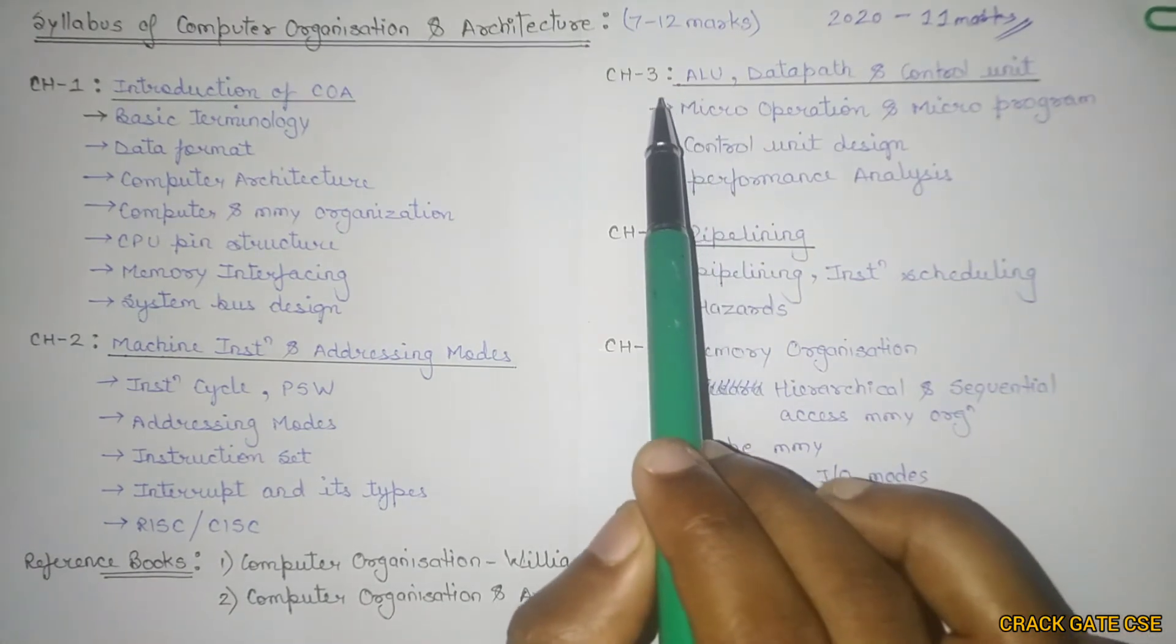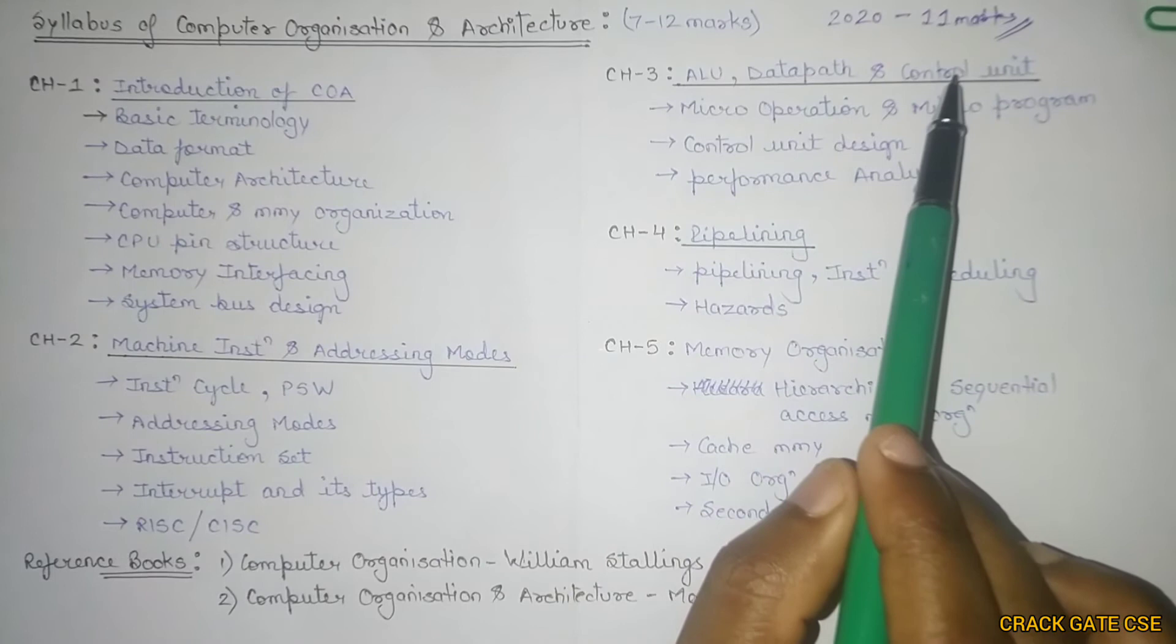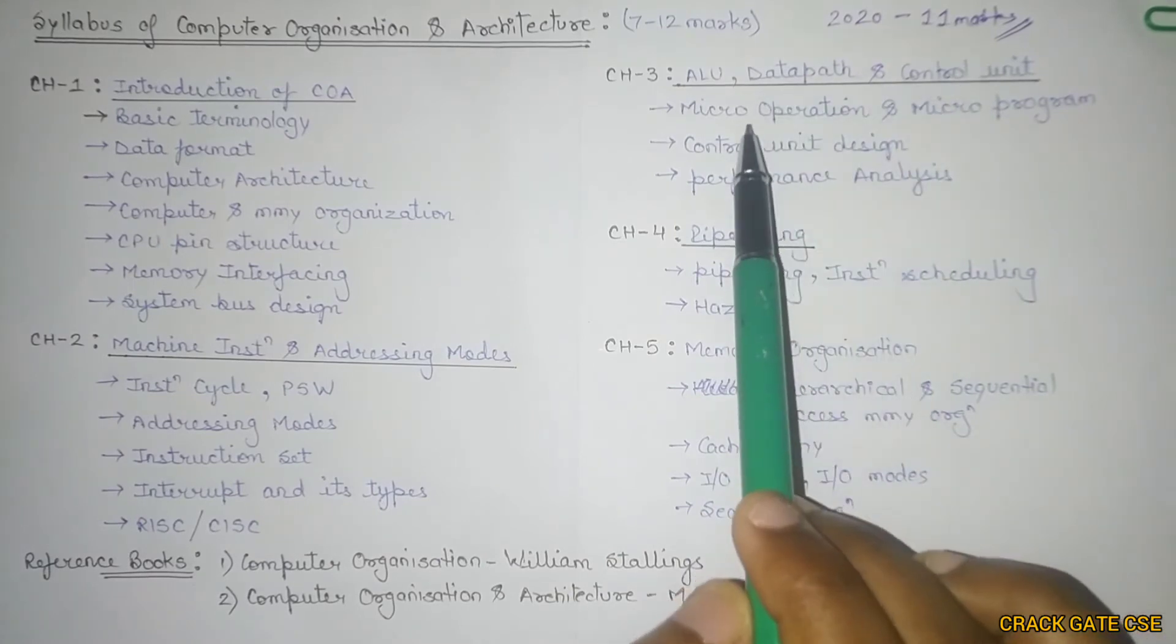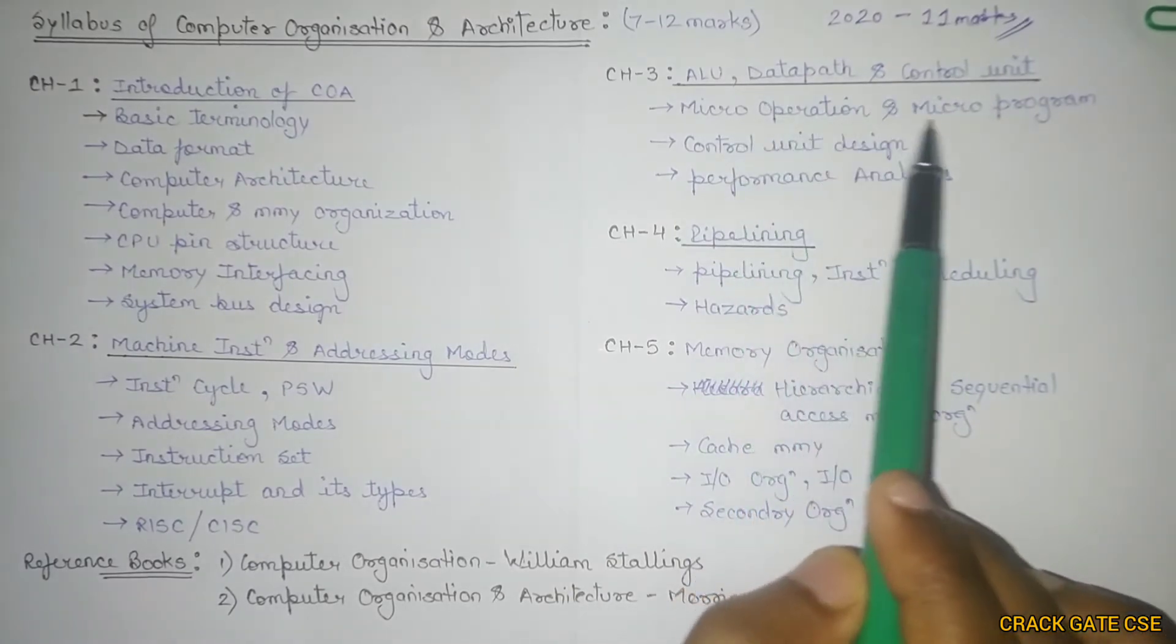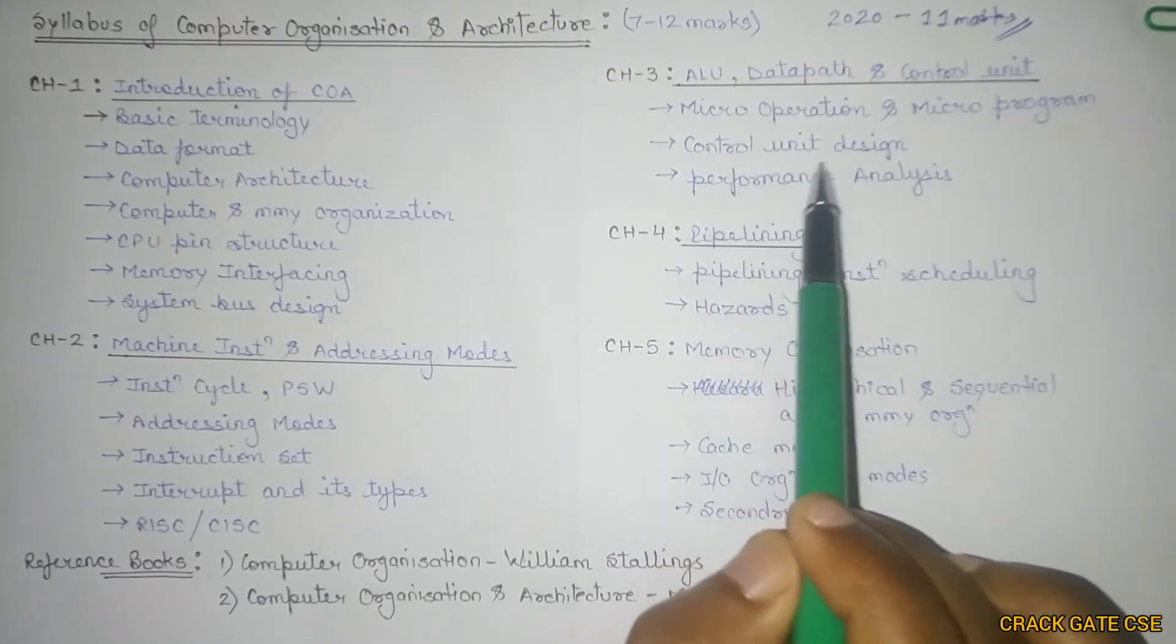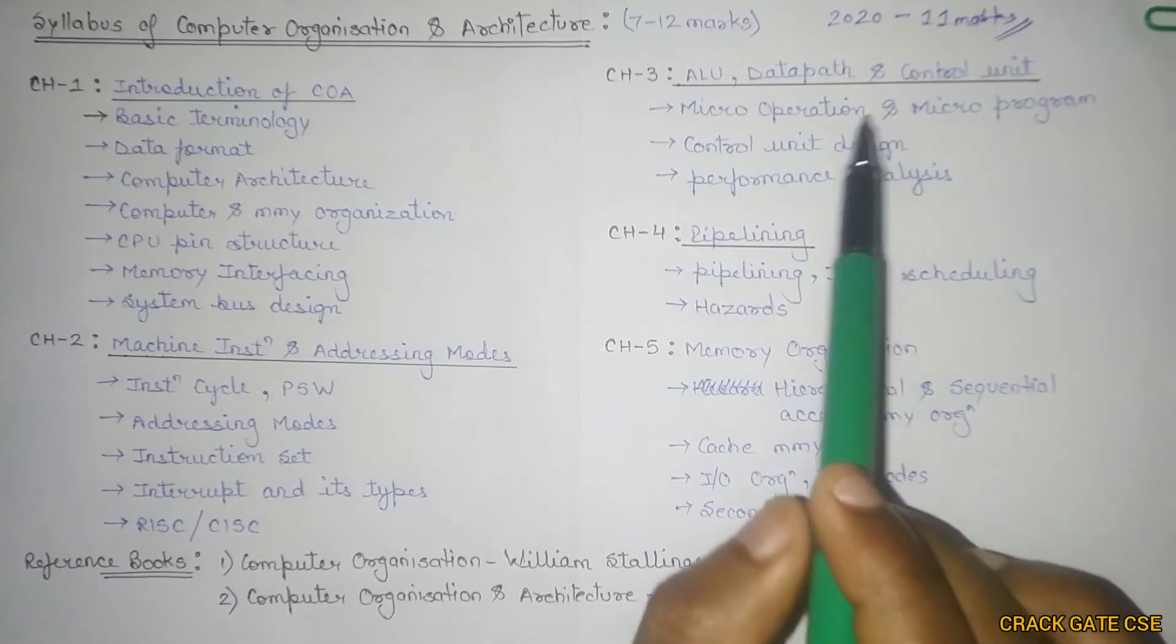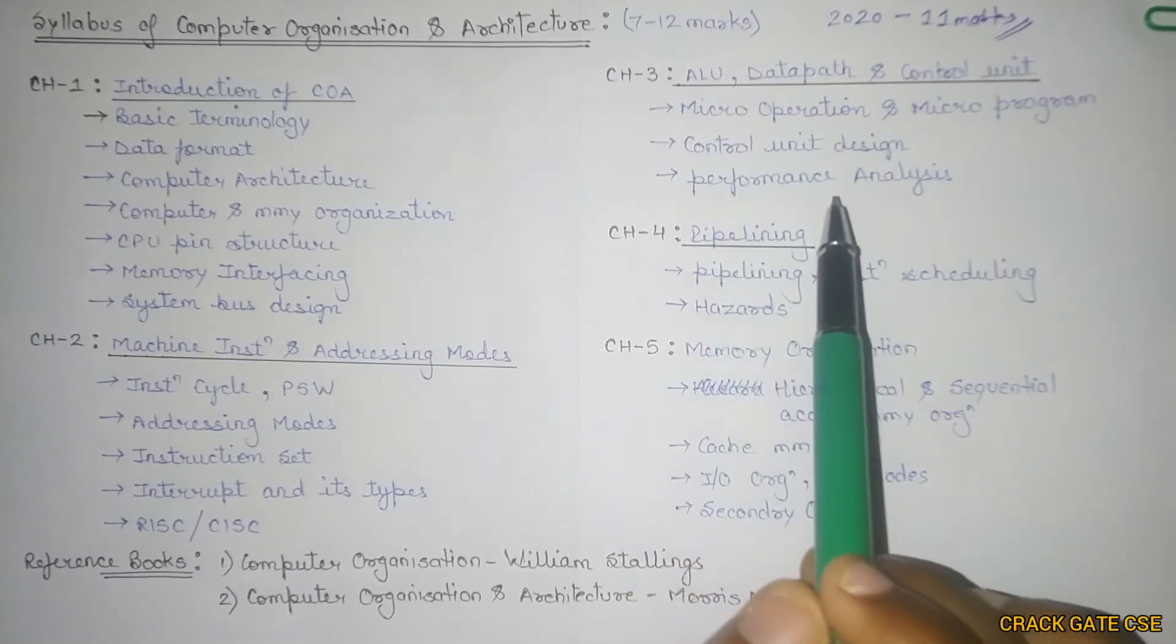Then we'll move on to the third chapter which will consist of ALU, data path, and control unit. In that particular chapter, we'll understand what is micro operation, how you can write the micro program, then control unit design, what is hardware control unit, what is micro program control unit, then we'll move on to performance analysis.